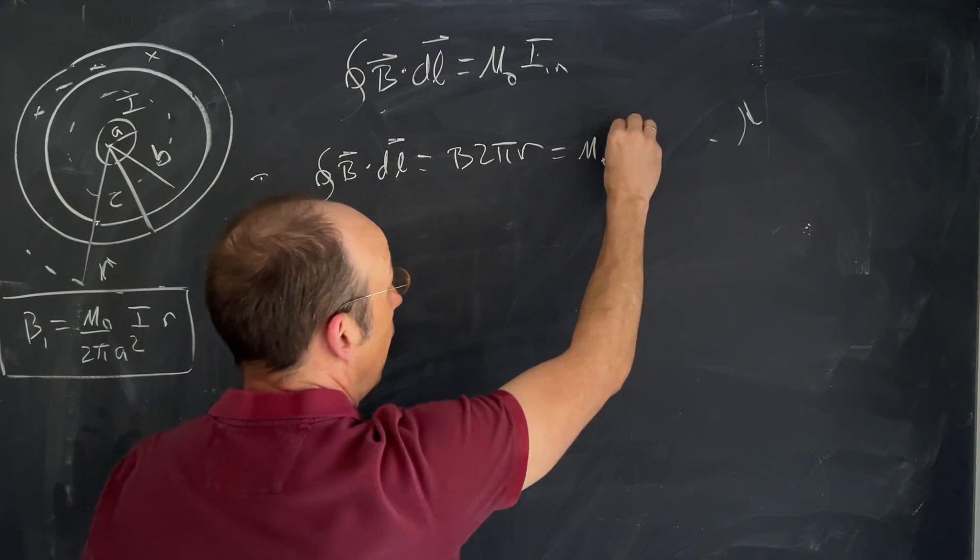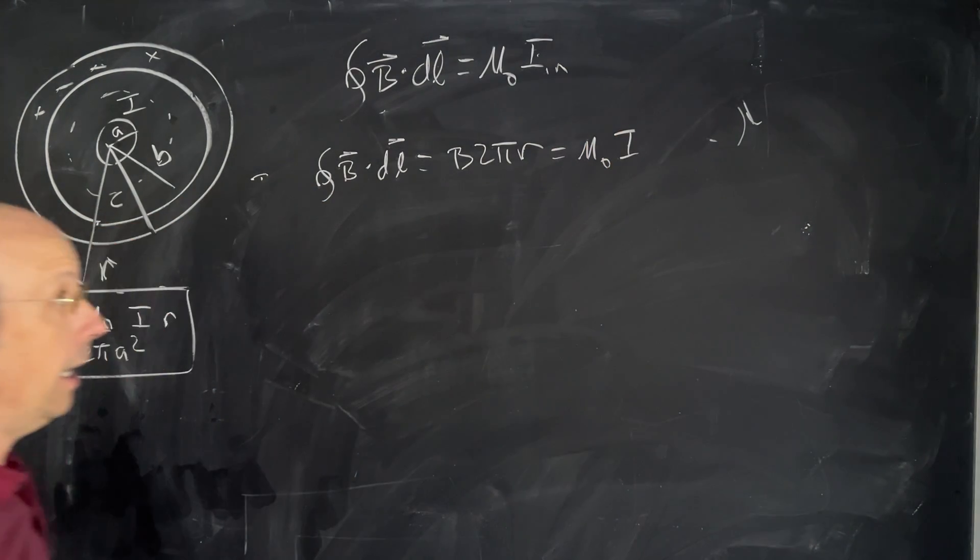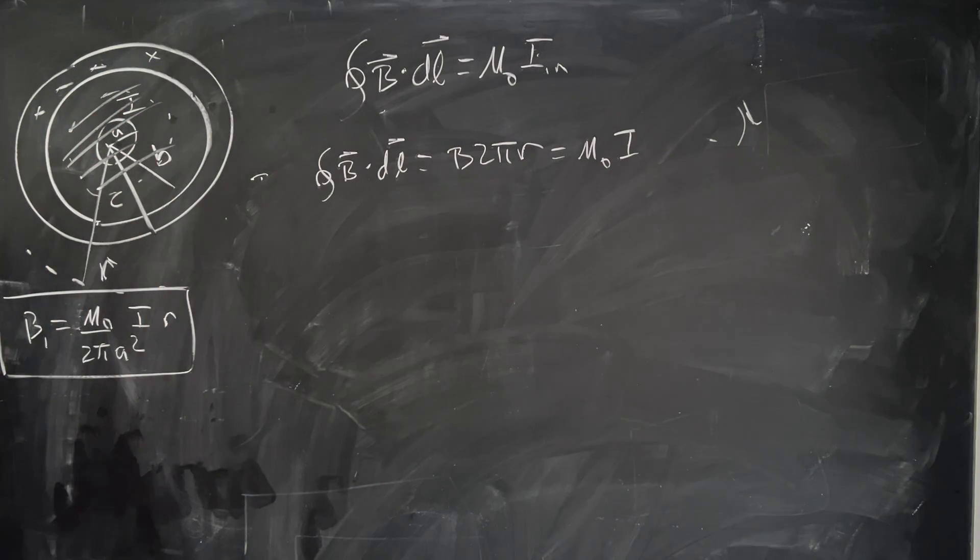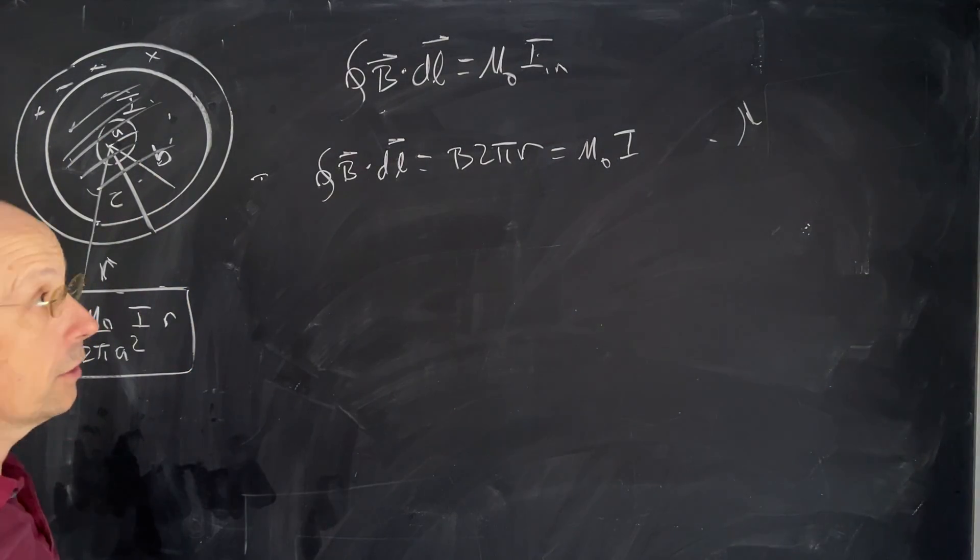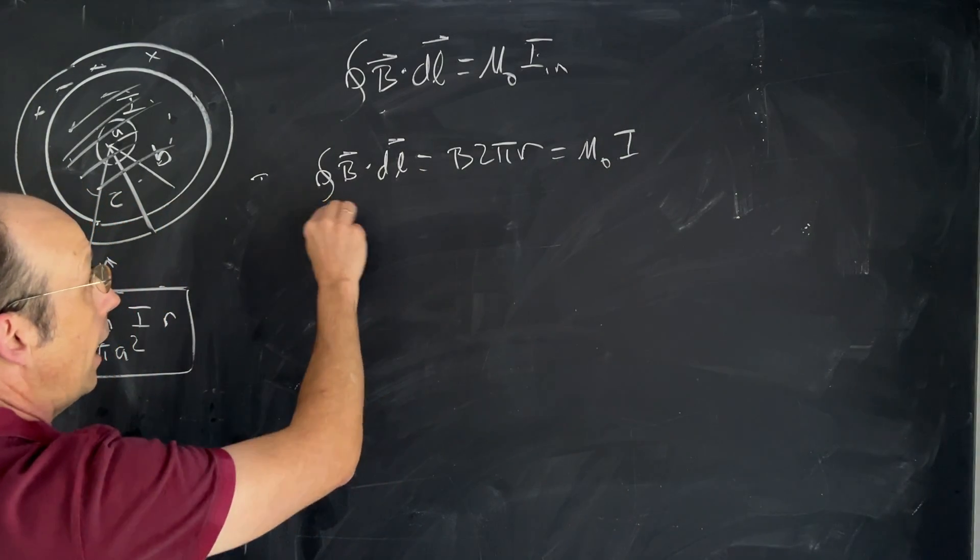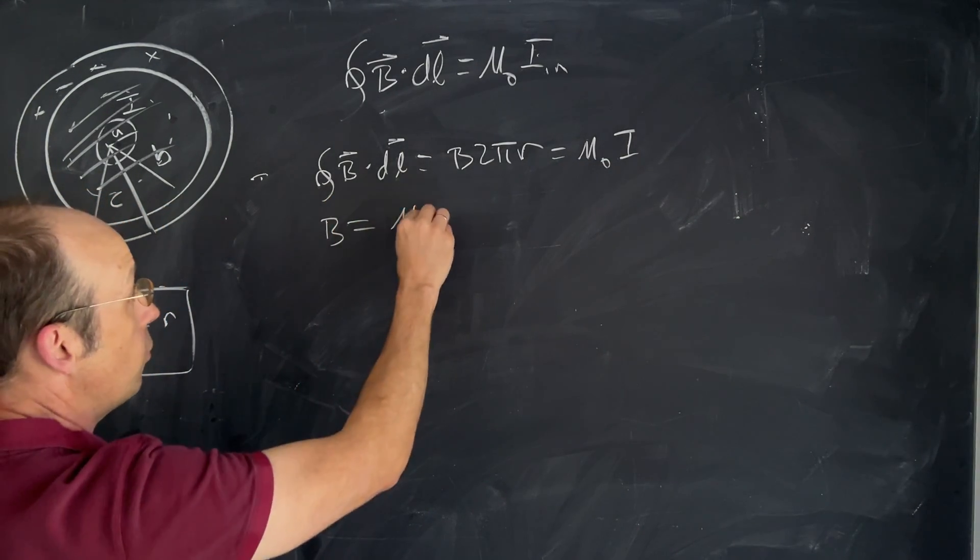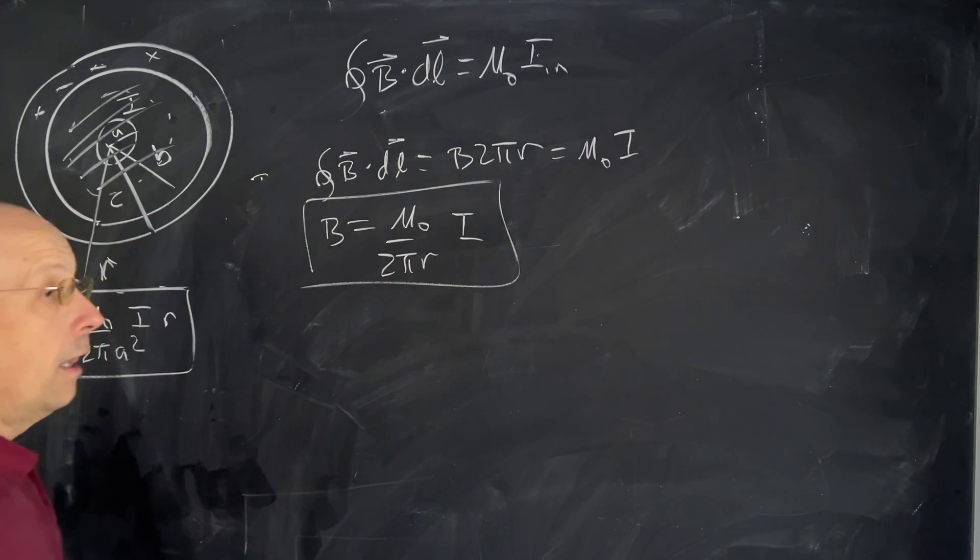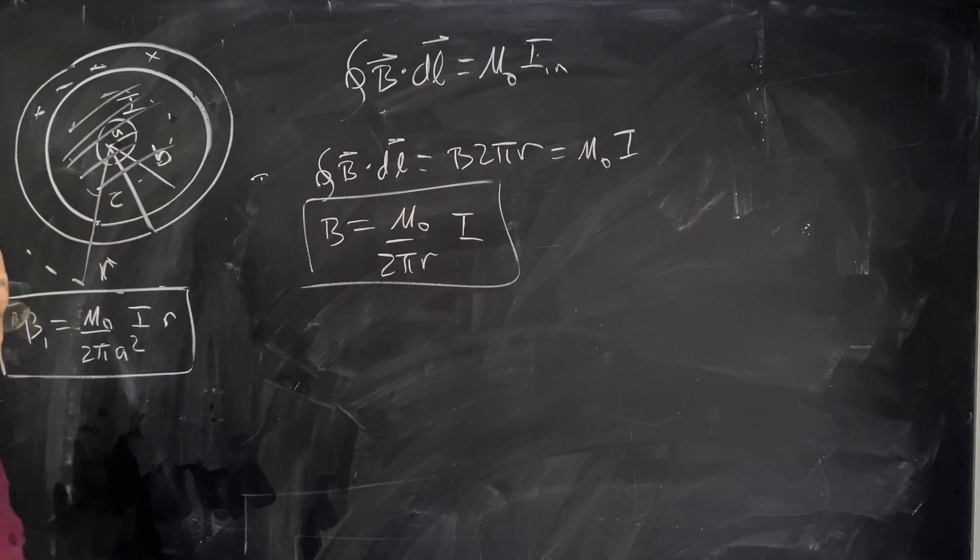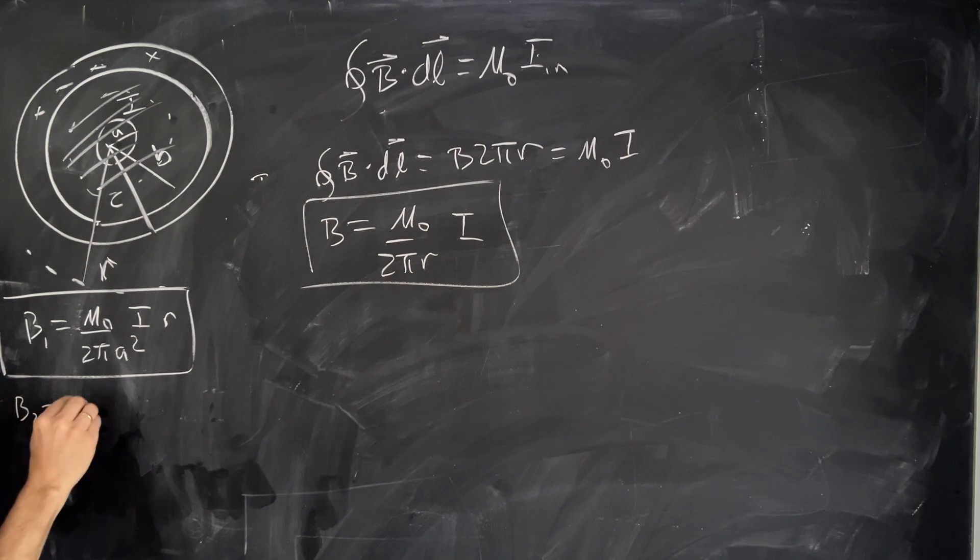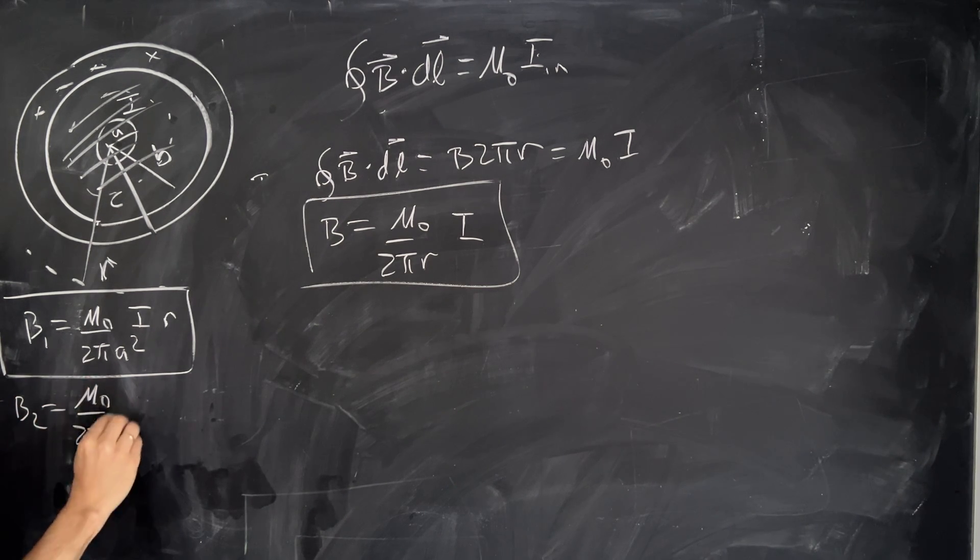And here μ₀ IN is just going to be I. So now when I take this area bounded by a path, it doesn't matter how big my radius is. I'm going to still have the total current coming through there of I. So I don't have to find the ratio of the current. Now I can solve for B. I get B equals μ₀/(2πR) times I. That's the magnetic field due to a long straight wire. So B₂ is μ₀/(2πR) I.